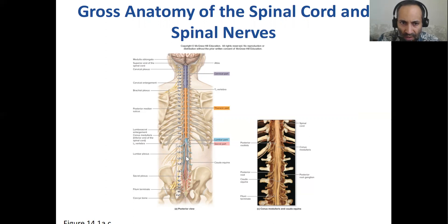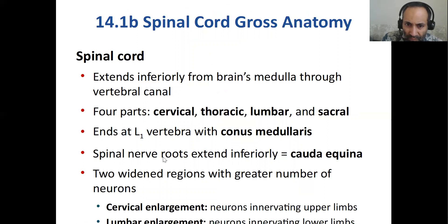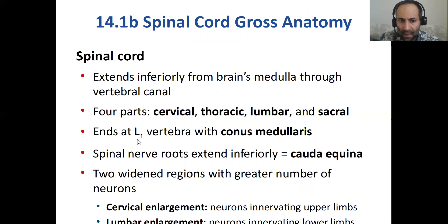In adults, the spinal cord comes to an end at about L1. The region there is called the conus medullaris — a conical region of your spinal cord which ends at L1.